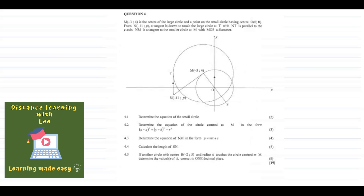Question 4 says: we are given point M with coordinates (−3, 4), which is the center of the large circle, and a point on the small circle having center (0, 0). From N with coordinates (−11, p), a tangent is drawn to touch the large circle at T, with NT parallel to the y-axis. NM is a tangent to the smaller circle at M, with MOS a diameter. 4.1 wants us to determine the equation of the small circle.